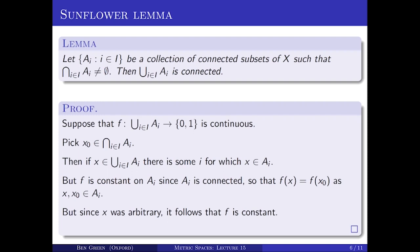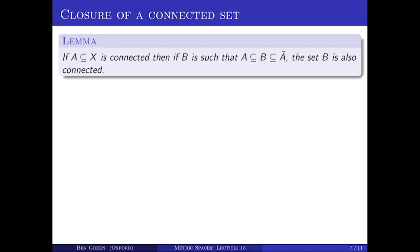The next property is that if you take a set that's connected and form its closure, then that's still connected — perhaps not too surprising. The same is true also for any set B that lies between A and the closure of A.